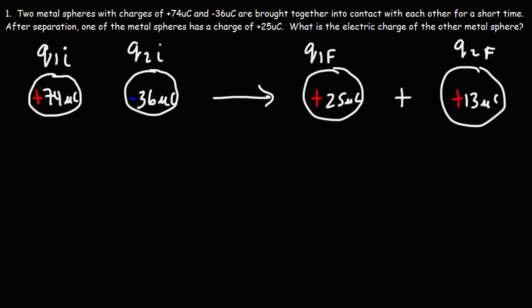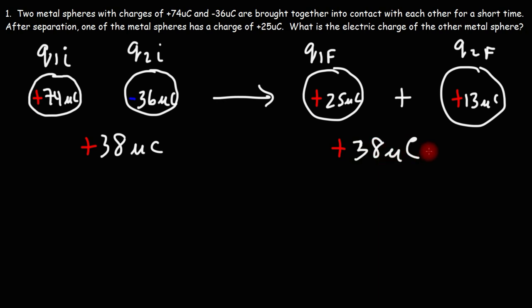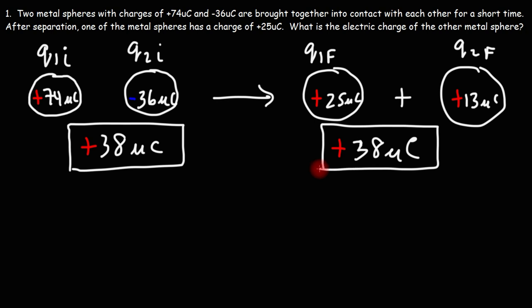If you add up +74 and -36, you get 38 — that's the total charge before contact was made. And after, 25 plus 13 is also 38 microcoulombs. So this is the total charge in the closed system before and after, and as you can see, it doesn't change. That's the basic idea behind the law of conservation of electric charge: the total electric charge in a closed system must remain constant before and after the spheres come into contact.